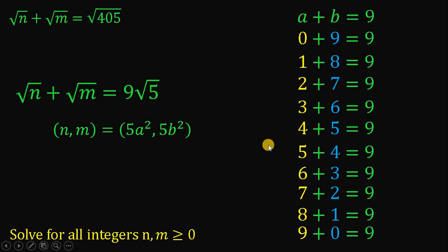Therefore, one possible value of n comma m must be equal to, if we get the first 0 plus 9 equals 9, a is 0 and b is 9. So, we have 5 times 0 squared comma 5 times 9 squared. And also, we can do this to all of those pairs like this.